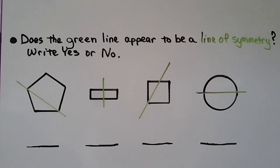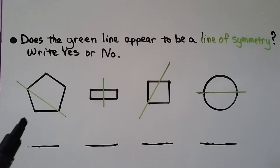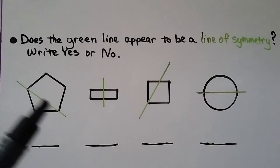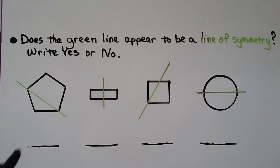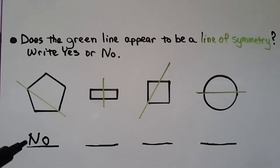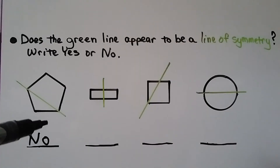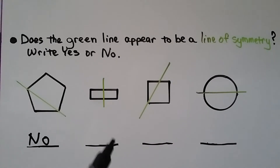Does the green line appear to be a line of symmetry? It says 'appear to be' because these are on the dry erase board and we can't fold them — we use our eyes to see if folding on that line would give an exact match on both sides. If you said no, you're right — that would not be an exact match. A vertical line coming down would have worked, but that diagonal line is not a line of symmetry. What about this green line — does it appear to be a line of symmetry?